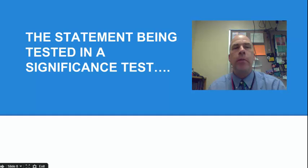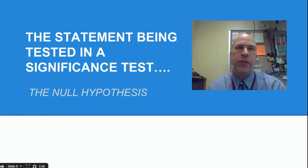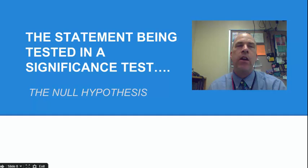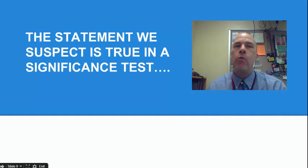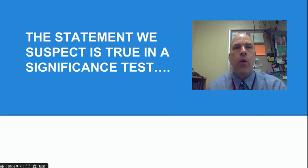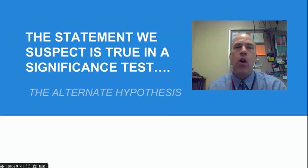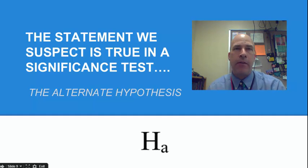So first, some terminology here. The statement being tested in a significance test is called the null hypothesis. Here it's the idea that all cheeseburgers have a mean weight of four ounces. The symbol we use for that is H sub zero. But there's also another hypothesis in a significance test — that's the statement that we suspect is true. Here I suspect that Wendy's cheeseburgers are actually less than four ounces on average. We call that the alternate or alternative hypothesis, and the symbol for that is H sub a.